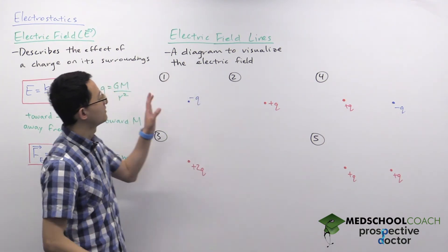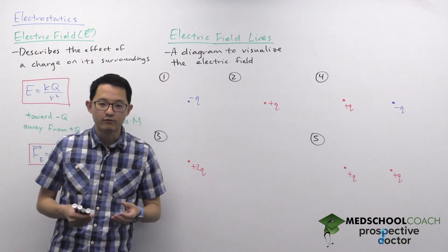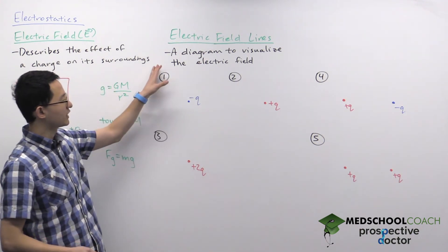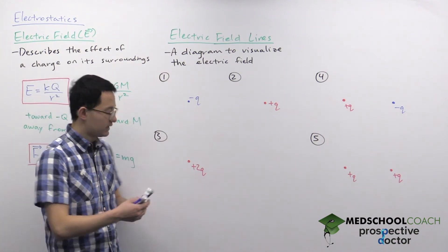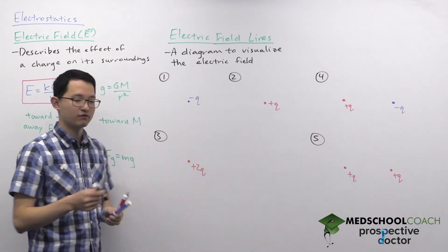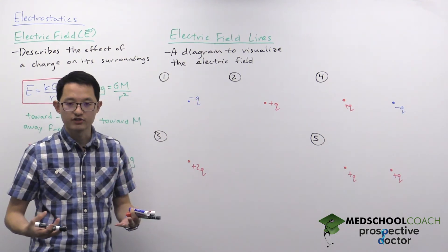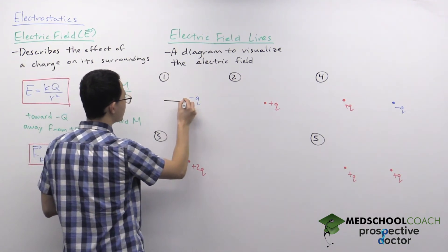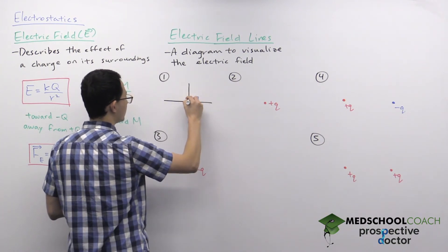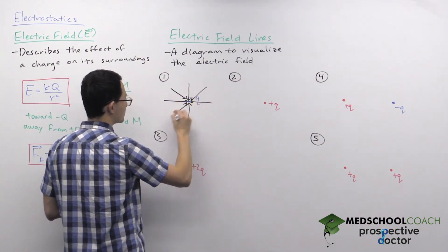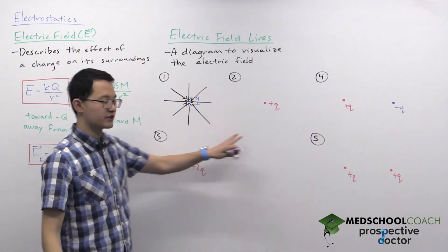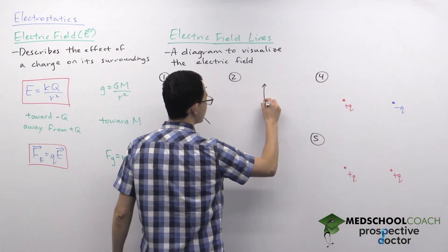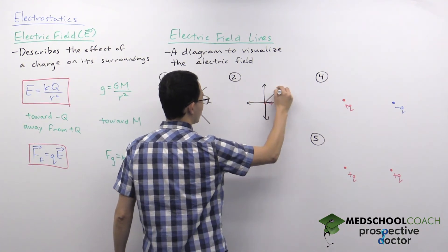Now let's talk about electric field lines. We cannot see electric fields, so drawing diagrams helps us visualize them. For a negative charge, positive test charges move towards it, so electric field lines point towards negative charges. For a positive charge it's the opposite — a positive test charge moves away from it, so electric field lines point away from positive charges.